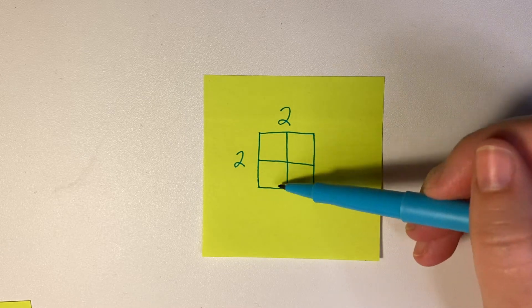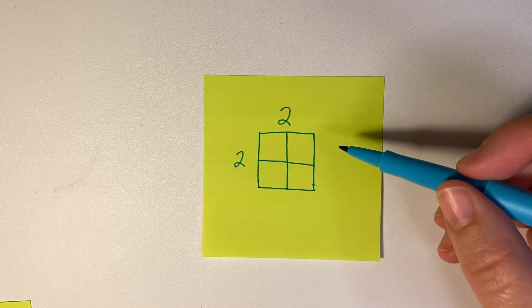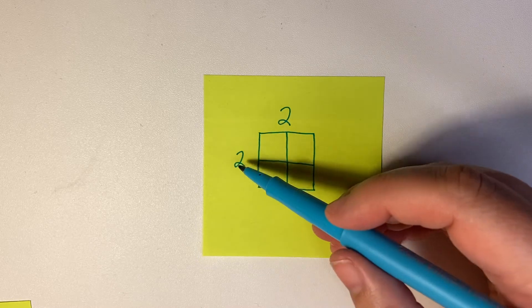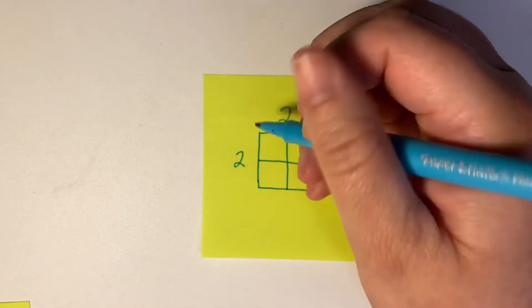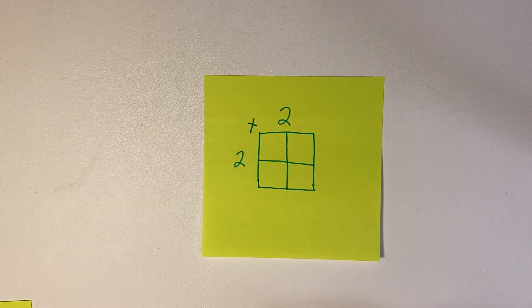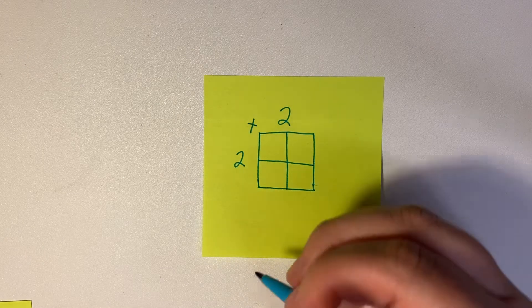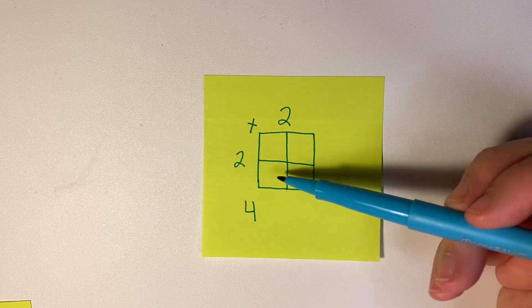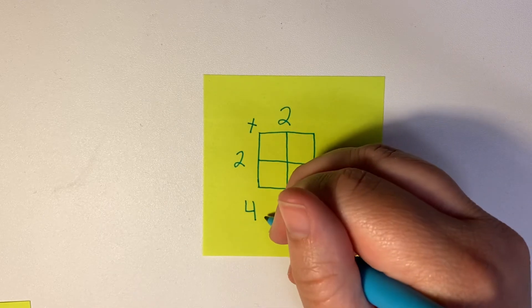Well, that's the area: four squared units. How you find this is you're going to do two times two. So two times two equals four, and you can literally see the four square units there.